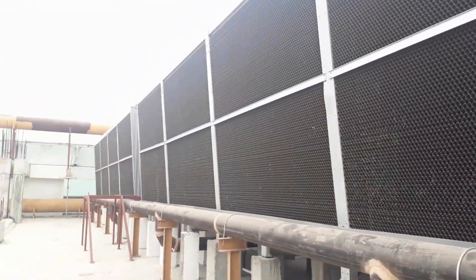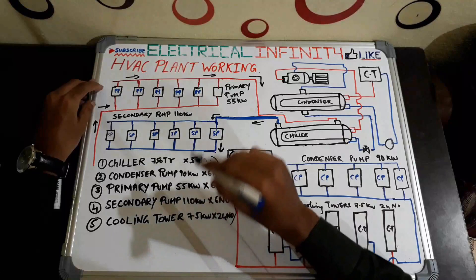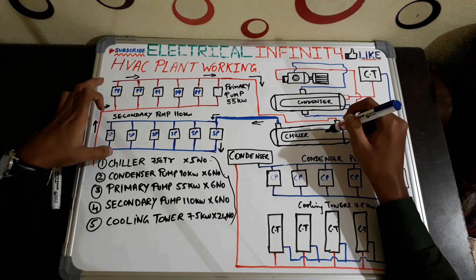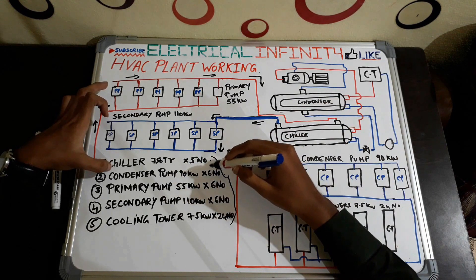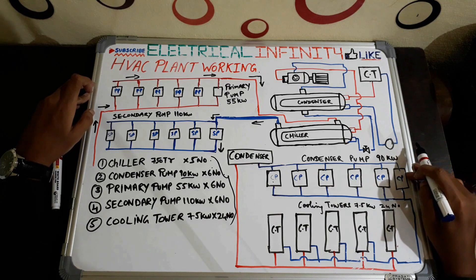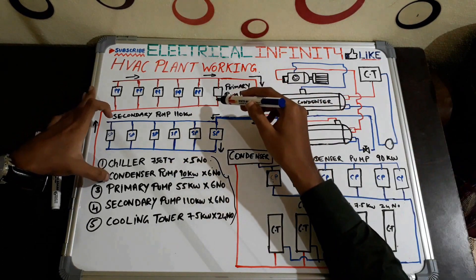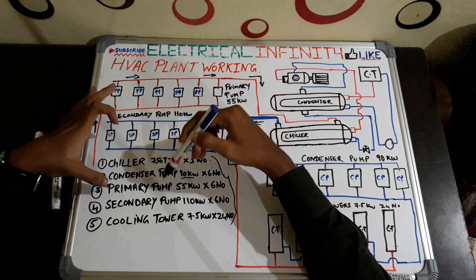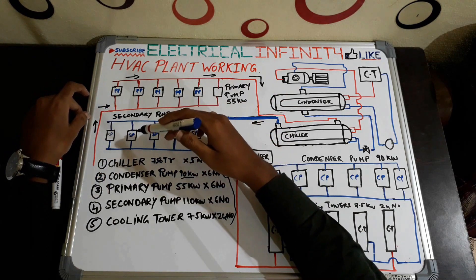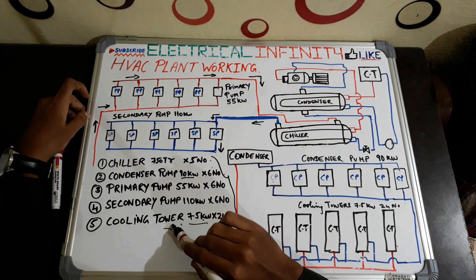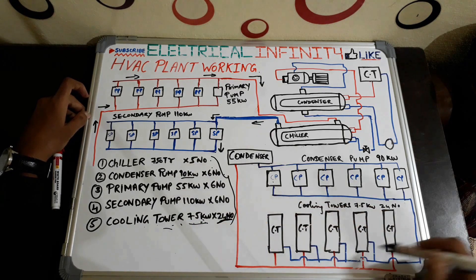Before going into detail, let me explain the parts used in this HVAC plant. We are using 5 chillers of 750 TR each, 6 condenser pumps each of 90 kilowatt, 6 primary pumps of 55 kilowatt each, 6 secondary pumps each of 110 kilowatt, and 24 cooling towers each of 7.5 kilowatt.